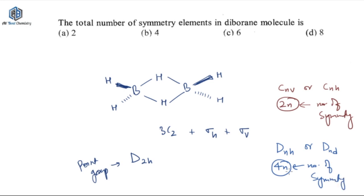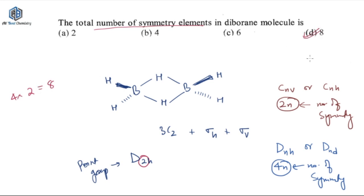So you should remember these two values: for a C point group like CNV or CNH, the number of symmetry is 2N; for DNH or DND, it is 4N. That makes things very easy. Now you can see that N is 2, so the number of symmetry elements will be 4N = 4 × 2 = 8. So 8 is the number of symmetry elements in this molecule.